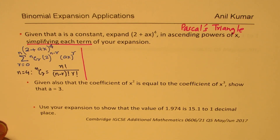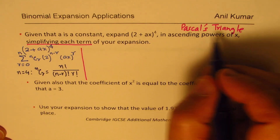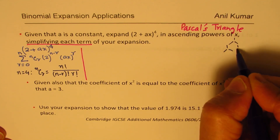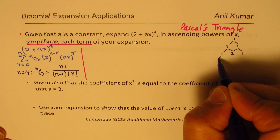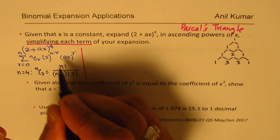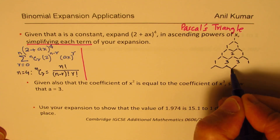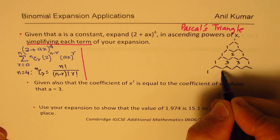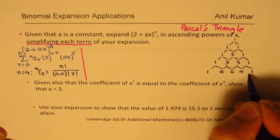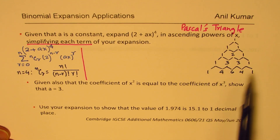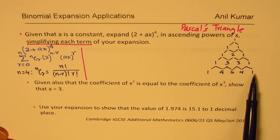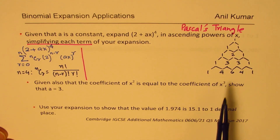The numbers in Pascal's triangle start with 1, then 1 1, and you add the previous two to get the next row. For the 4th power expansion, the coefficients are 1, 4, 6, 4, 1. These are the values you get from nCr for r = 0, 1, 2, 3, and 4. Using these coefficients is simpler than applying the nCr formula each time.